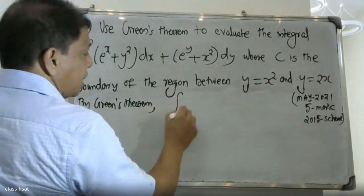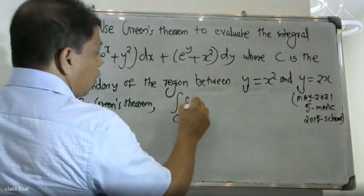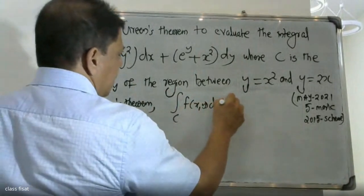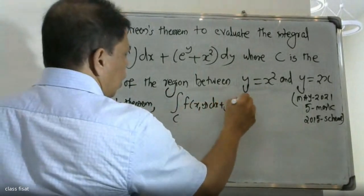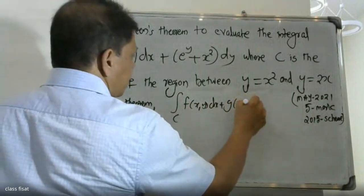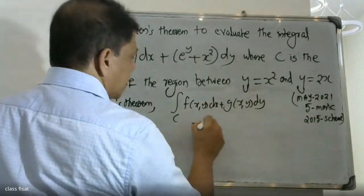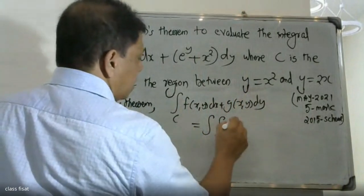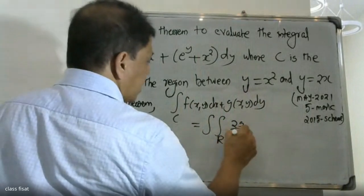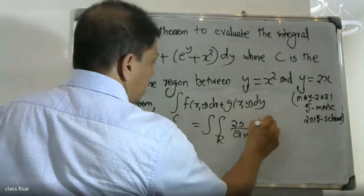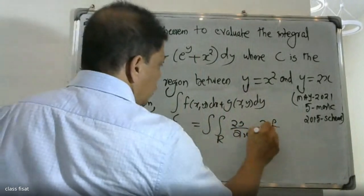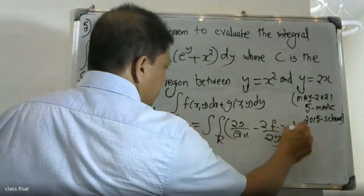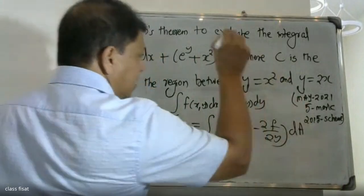By Green's theorem, the integral over C of f(x,y) dx plus g(x,y) dy is equal to the double integral over region R of dou g by dou x minus dou f by dou y, into dA. This is the Green's theorem formula.